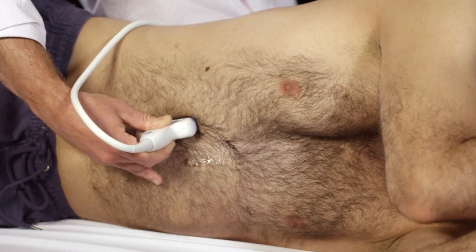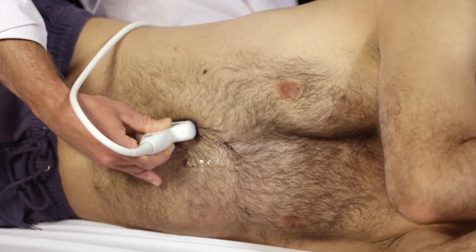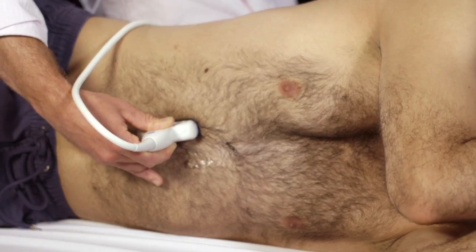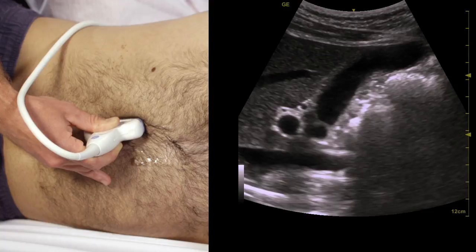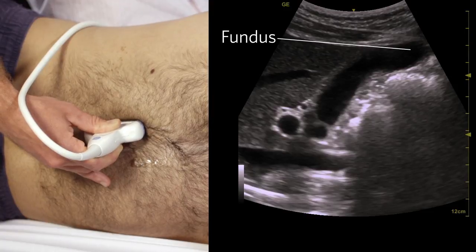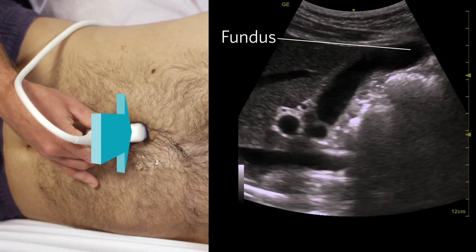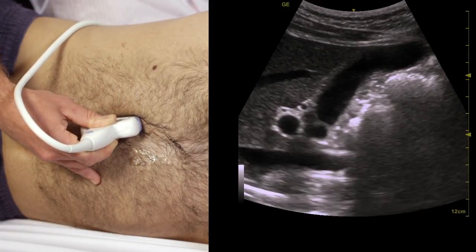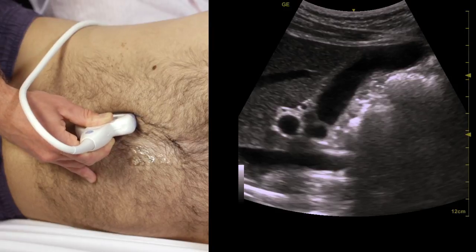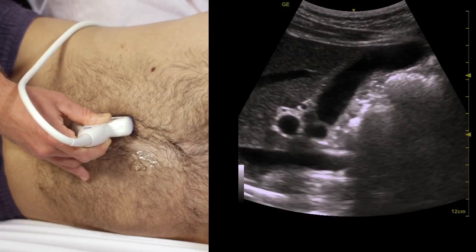You should also test for a sonographic Murphy's sign. This is an acute tenderness on compression of the gallbladder with your ultrasound probe. To test for this, find the fundus of the gallbladder with the ultrasound and apply pressure here. A positive sonographic Murphy's sign is found if this is the point of maximal tenderness.